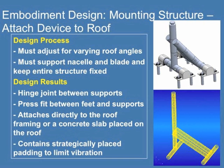When designing the mounting structure, three primary goals had to be met. First, the structure had to be suitable for roofs of varying inclines, accomplished by designing a hinged support attached to the primary vertical support, with feet attached through conical press fits for easy installation at any angle. These press fits contain damping pads to allow for greater tolerances and reduce vibration. Second, the structure had to have a stable interface with the roof. For flat roofs, the structure is fastened to a large concrete block — a completely non-invasive process requiring no modifications to the roof itself. For inclined roofs, the structure must be attached to the metal framing beneath the roof by a general contractor.